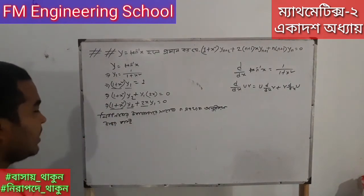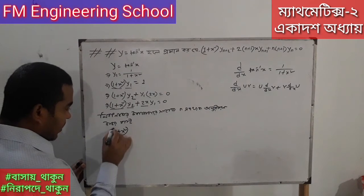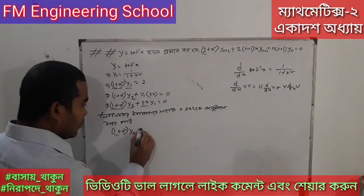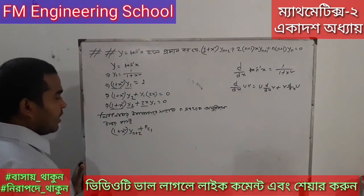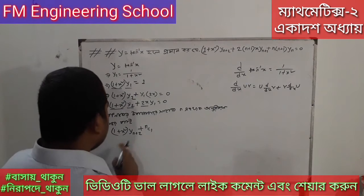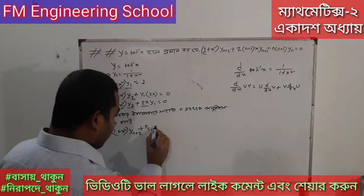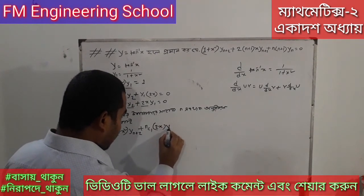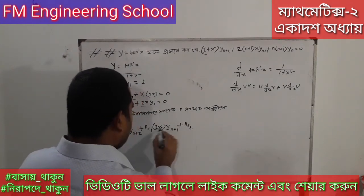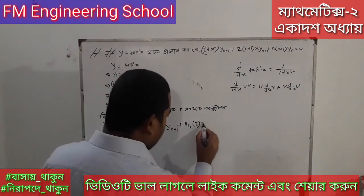Applying Leibniz theorem to differentiate n times: (1 + x²) yₙ₊₂ plus nC1 · 2x · yₙ₊₁ plus nC2 · 2 · yₙ plus 2x · yₙ₊₁ plus nC1 · 2 · yₙ is the expanded form.